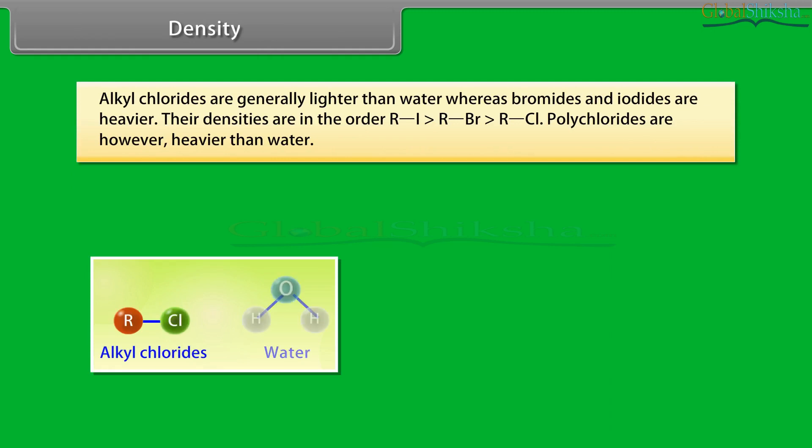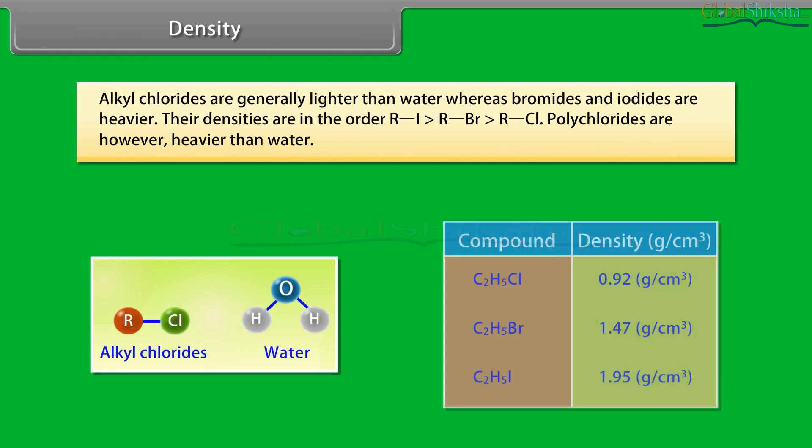Density: Alkyl chlorides are generally lighter than water, whereas bromides and iodides are heavier. Their densities are in the order RI > RBr > RCl. Polychlorides are, however, heavier than water.